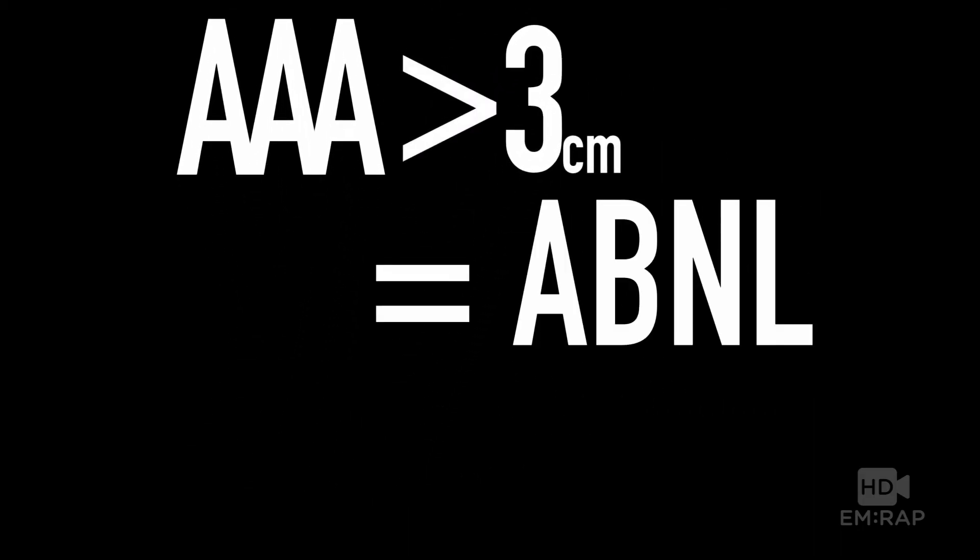If you need a mnemonic for when an aorta becomes aneurysmal: triple A — three letters, one, two, three — a triple A greater than three centimeters is considered abnormal. Many places say to measure at the most proximal, mid, and just above the iliac bifurcation, but I find that takes a lot of work. Instead, I take a clip of the entire aorta and measure once at the widest point. If your machine can record clips, just record clips and take one measurement at its widest point.